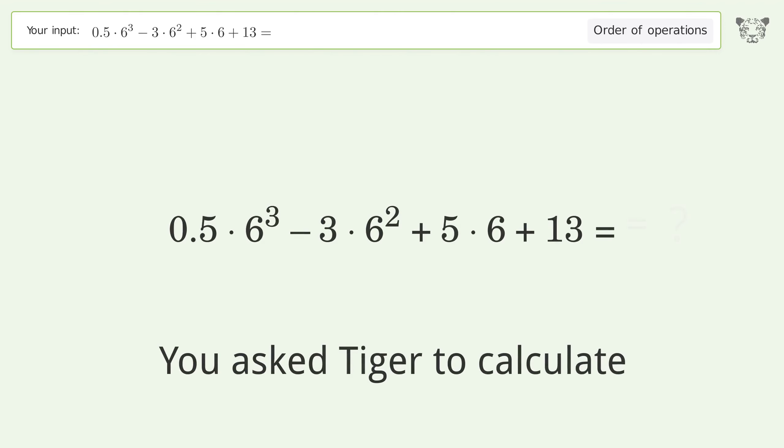You asked Tiger to calculate. This deals with the order of operations. The final result is 43. Let's solve it step by step.